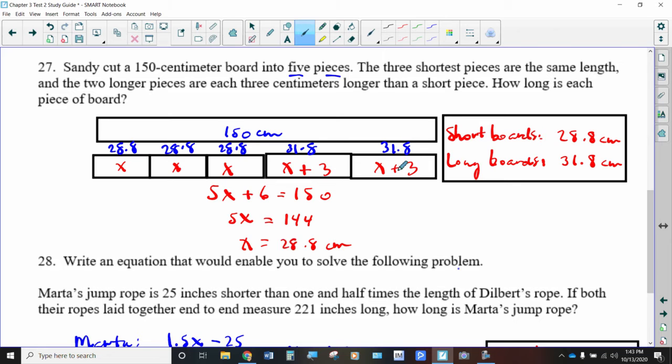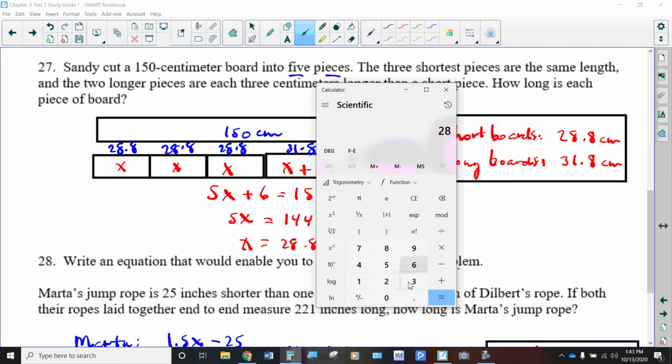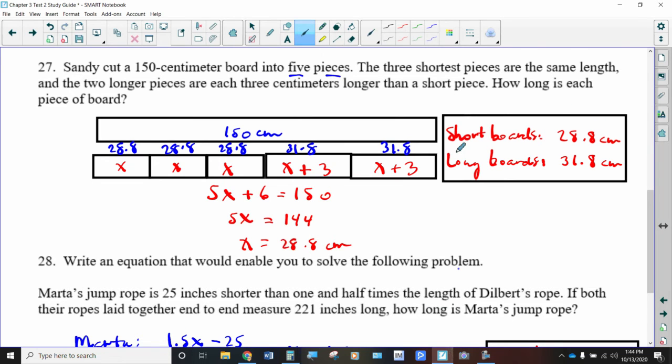Now, can you imagine doing a guess and check process for this and finally settling on 28.8 and 31.8? That would be a nightmare, but since we're solving it algebraically, it's the same number of steps as you would ever have. First, you subtract six from each side, then you divide by five, and whatever you get, that's your answer. Now, we want to make sure that this is correct, that the sum of all of these adds up to 150. So I'm going to use my calculator for that. 28.8 times 3 is 86.4. So all three of those combined make 86.4 centimeters, and I'll just add a couple of 31.8s to that. And sure enough, we get 150. So I've checked, and I can now declare my answer. The shorter ones are 28.8 centimeters. The longer ones are 31.8 centimeters.